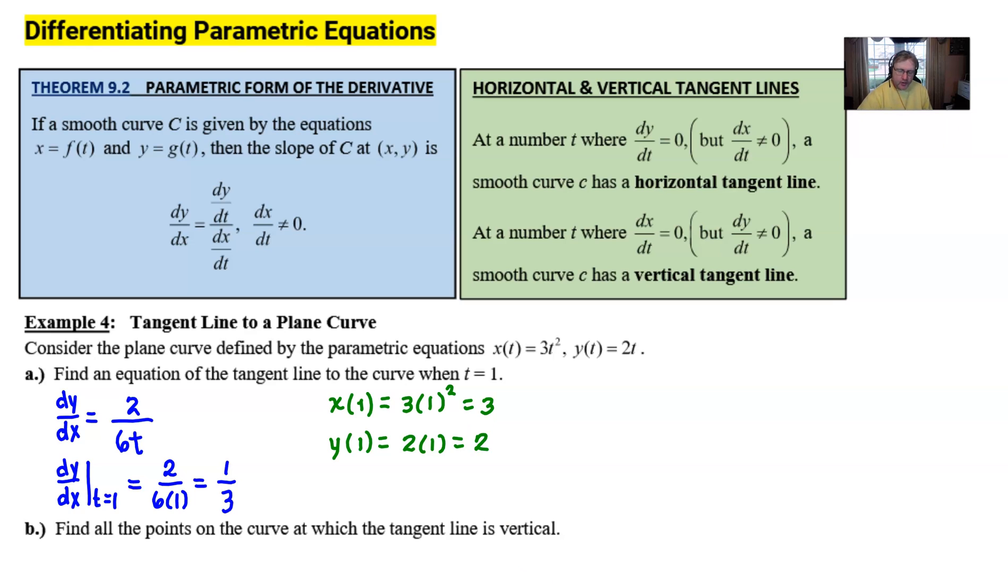And I get x(1) is 3, and y(1) would be 2. And at this point, you have all the information that you need to write the equation of your tangent line. We're just going to do that in point-slope form, and I'm not going to alter from that. I'm going to leave it in that point-slope form just like this so that I don't run the risk of making a mistake.